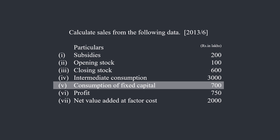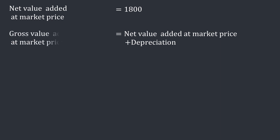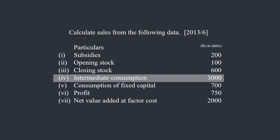Consumption of fixed capital is the same as depreciation, which is 700 lakhs. We add depreciation to net value added at market price to obtain gross value added at market price: 1800 plus 700 equals 2500 lakhs. Intermediate consumption is 3000 lakhs.